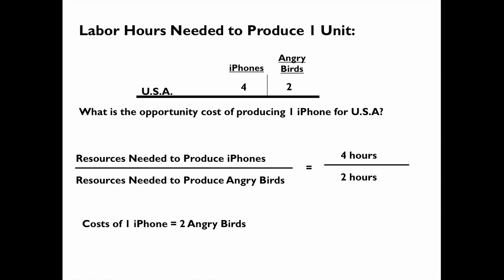That is how many Angry Birds the US gives up every time they produce one iPhone. It takes them 4 hours to produce one iPhone, and in those 4 hours they could have produced 2 Angry Birds if they had used those hours to produce Angry Birds instead.